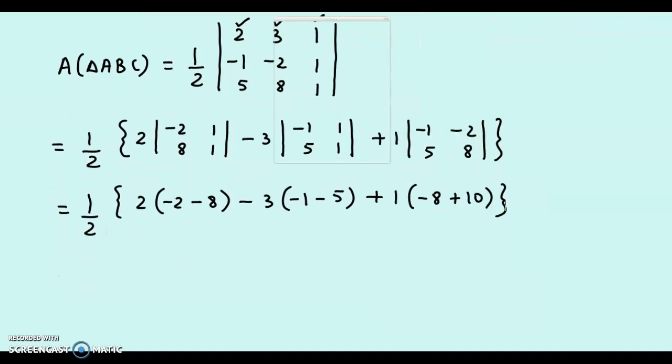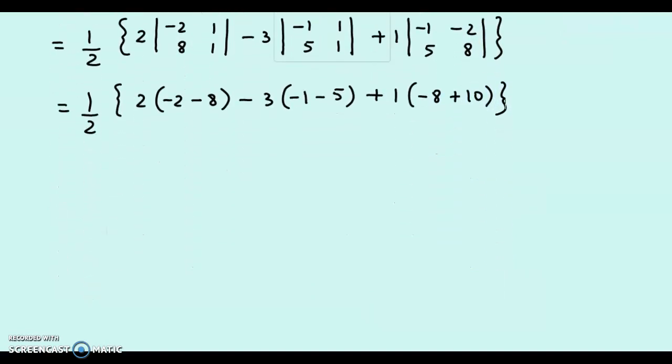Further, we get half into. This is -10 into 2, that becomes -20. This difference is -6 here. -1 minus 5 is -6. -6 into -3, that's positive 18. 10 minus 8 is 2. 2 into 1, that's 2.